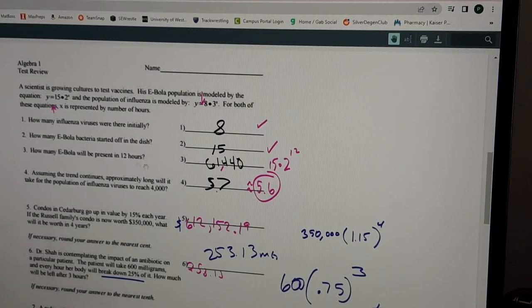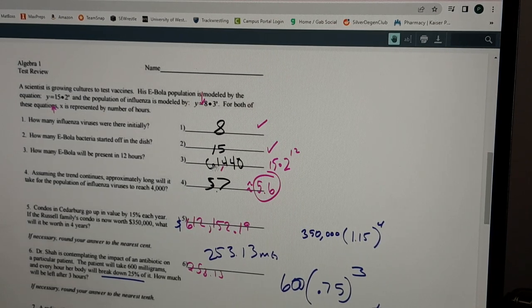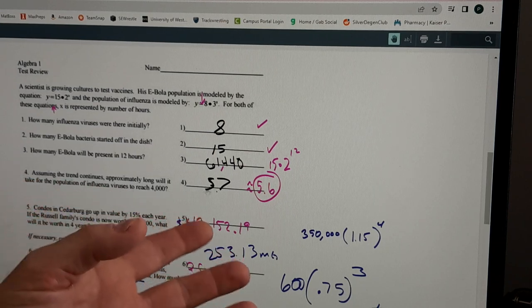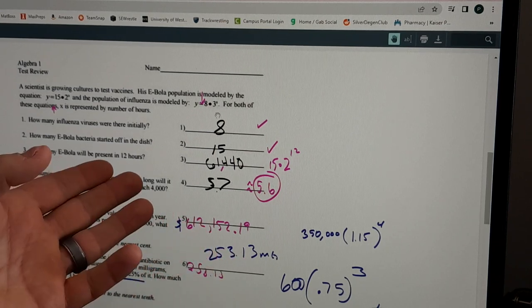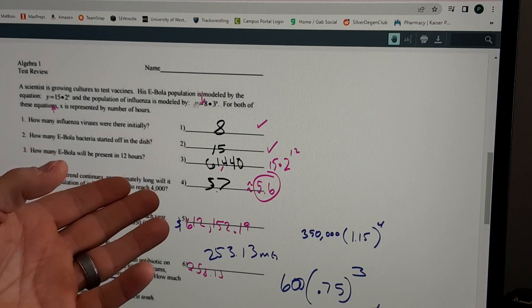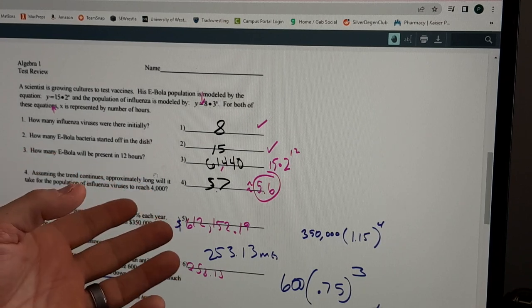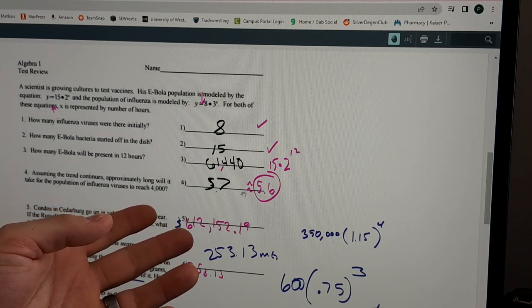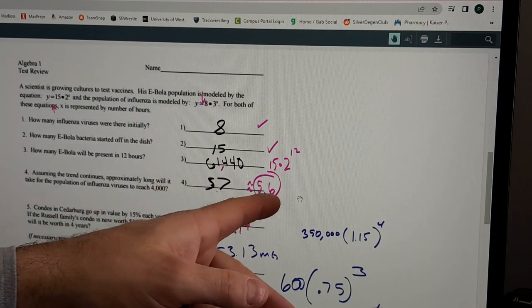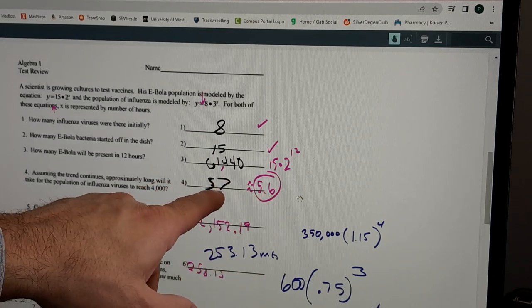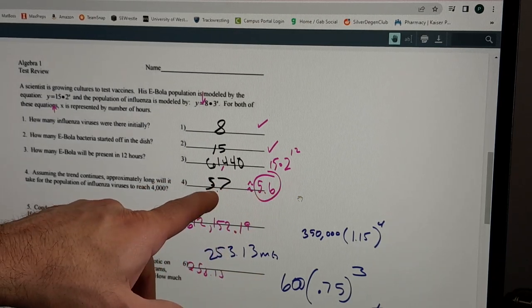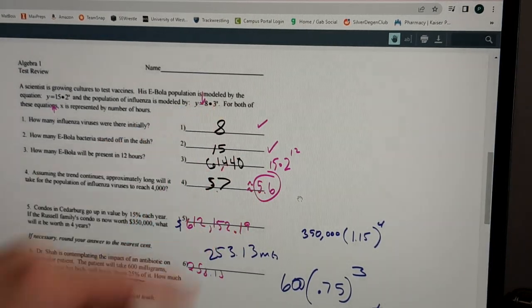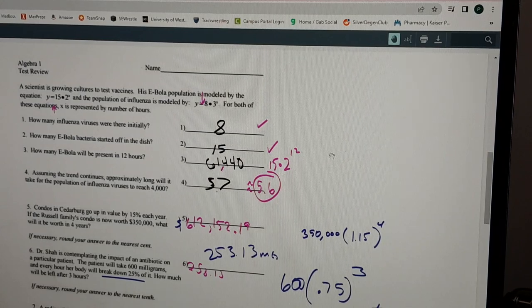Now this one is different - number four, assuming the trend continues, how long will it take for the influenza virus to reach 4,000? So this is the equation for the flu virus and you've got to plug it in until it gives you 4,000 viruses. What we concluded was if you plugged in between 5 and 6, so they got 5.7 or 5.6. Students put 5.7 this day - I think it doesn't matter, but if you're in between 5 and 6 and you're close, you're good to go there.